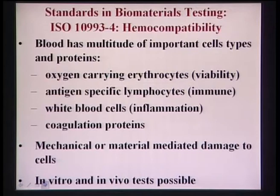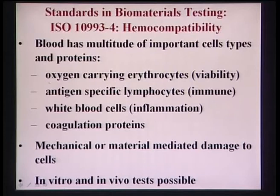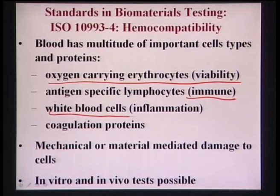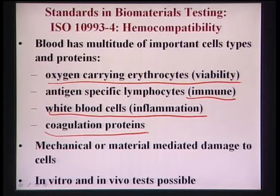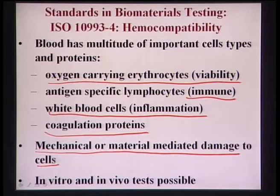Blood is considered a tissue in the sense that it contains a large number of cells and proteins that perform specific functions: oxygen-carrying capacity, antigen-specific lymphocytes for immune response, white blood cells responsible for inflammation, proteins that help in blood coagulation, and mechanical or material-mediated damage to cells - meaning external mechanical stress can also damage blood tissues.